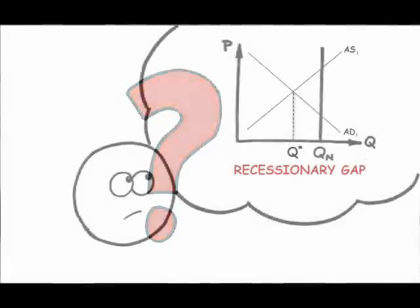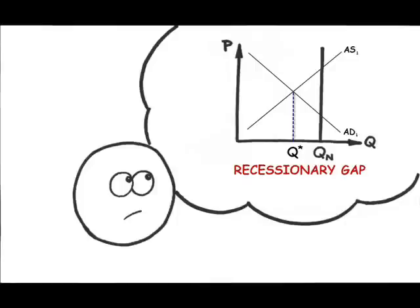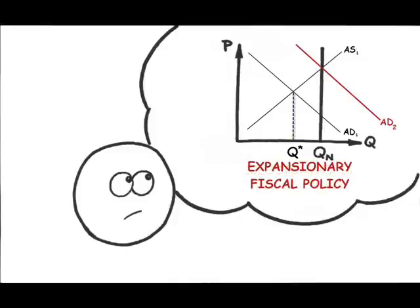Well, if there's a recessionary gap where the equilibrium GDP is lower than our potential, which also means that unemployment is higher than the natural rate, expansionary policy would be the appropriate response. As aggregate demand increases, the economy moves to full employment and potential GDP.